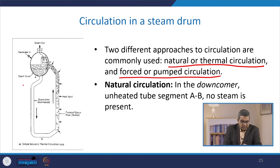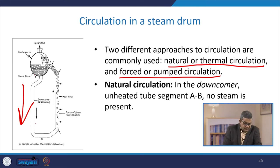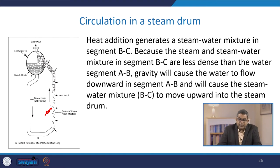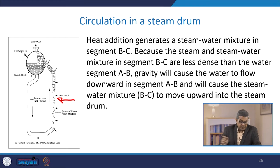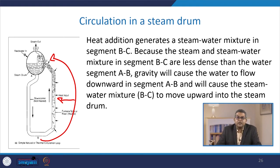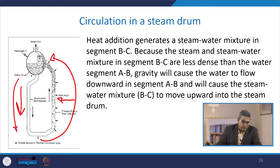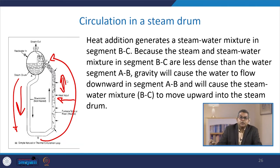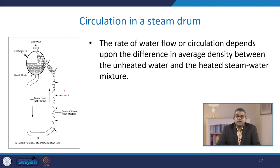In natural circulation, the downcomer is an unheated tube segment from A to B. Heat addition generates a steam-water mixture in segment B to C. Because the steam and steam-water mixture in segment B to C are less dense than the water in segment A to B, gravity causes water to flow downward in segment A to B, and this causes the steam-water mixture to move upward into the steam drum.